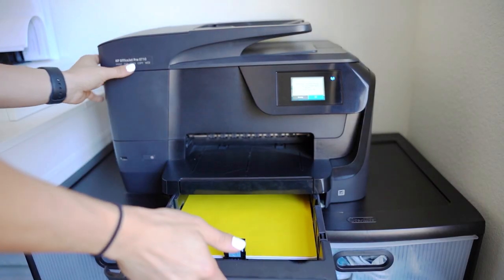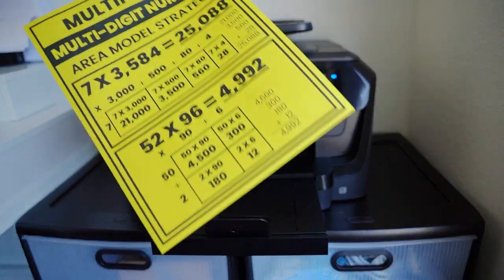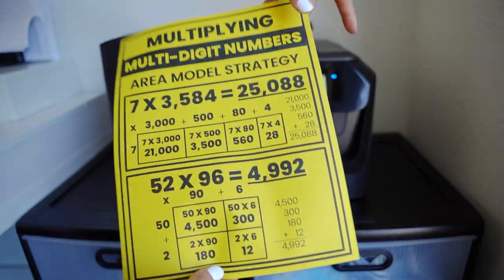You can also utilize colors when you print the anchor charts. You could print them mini size, standard size, or poster size on colored paper. This could help you — whether displaying them in your classroom or in student notebooks — differentiate between subject areas or units. You could assign each subject or unit a different color, and it would help students be able to see those connections.